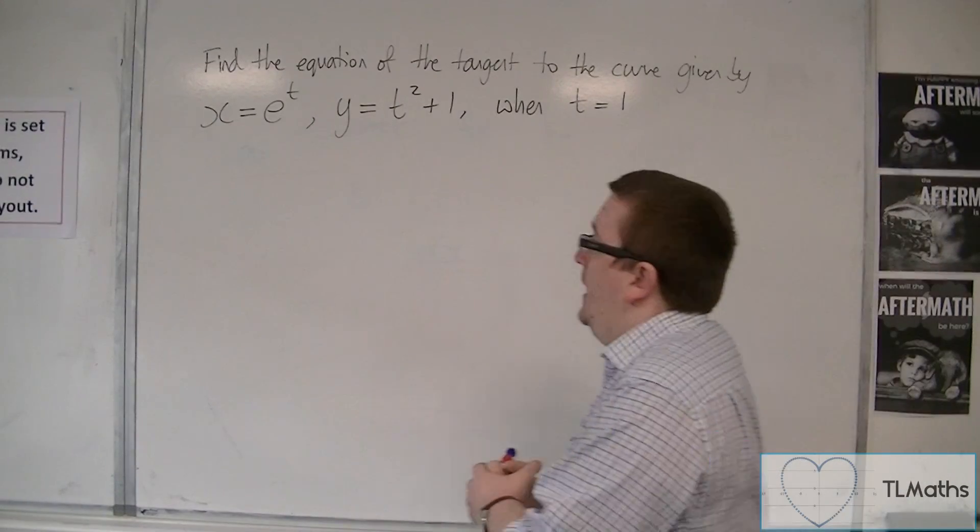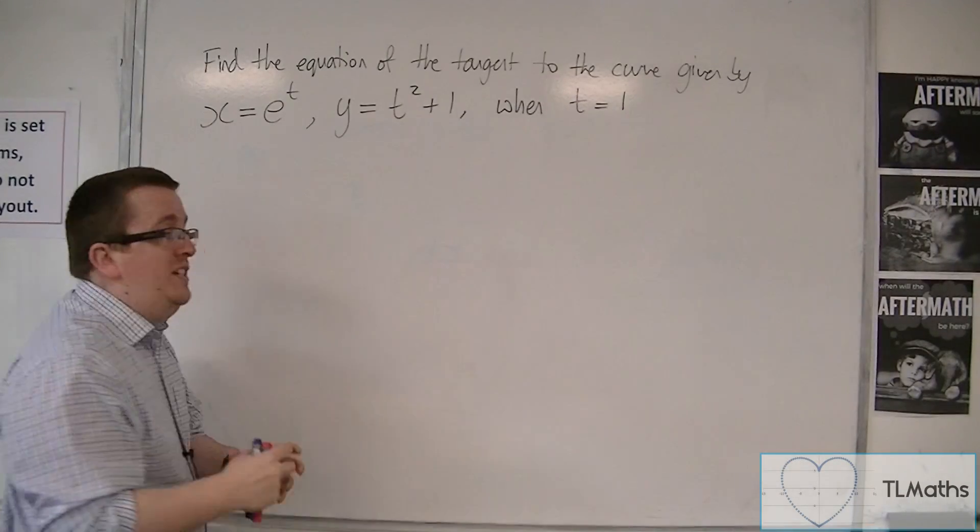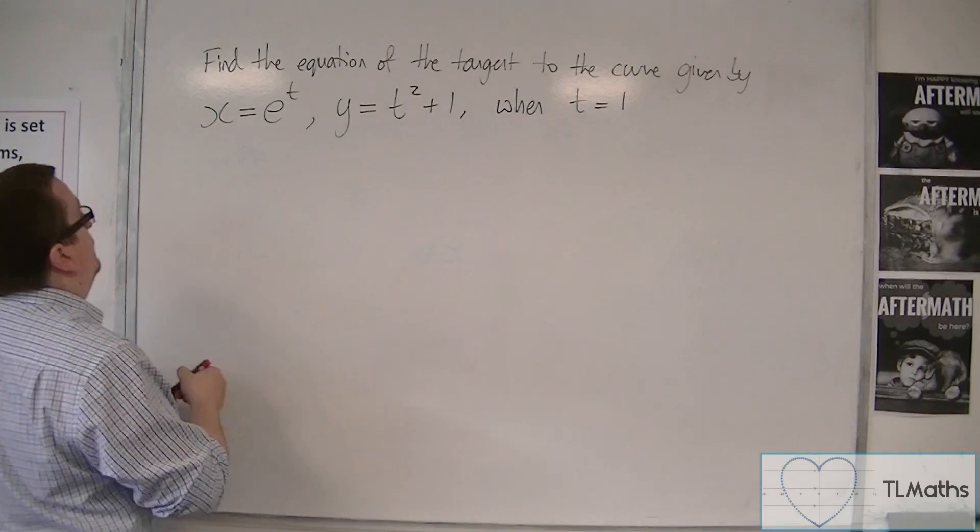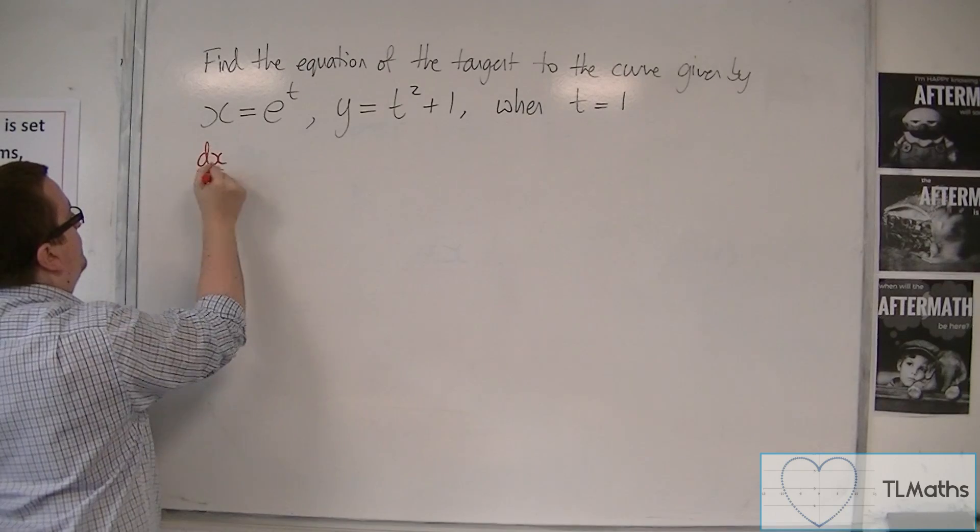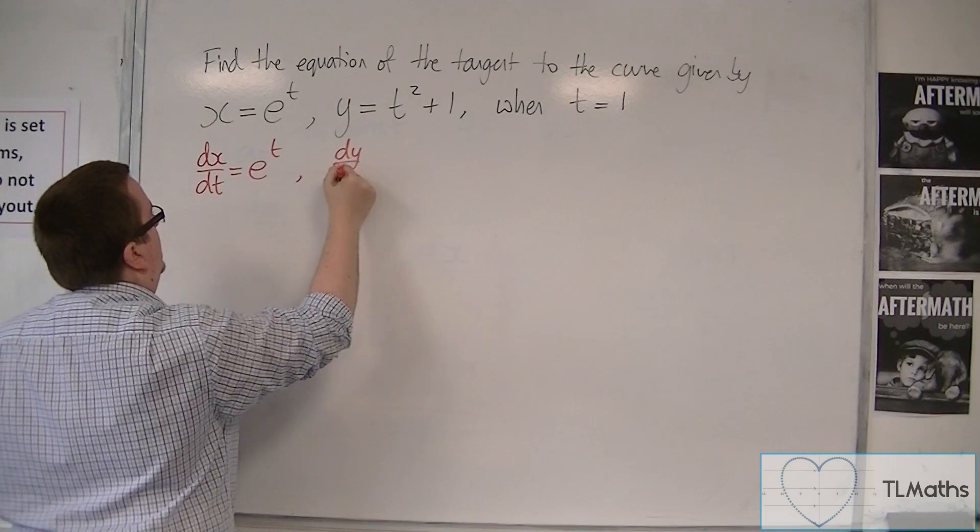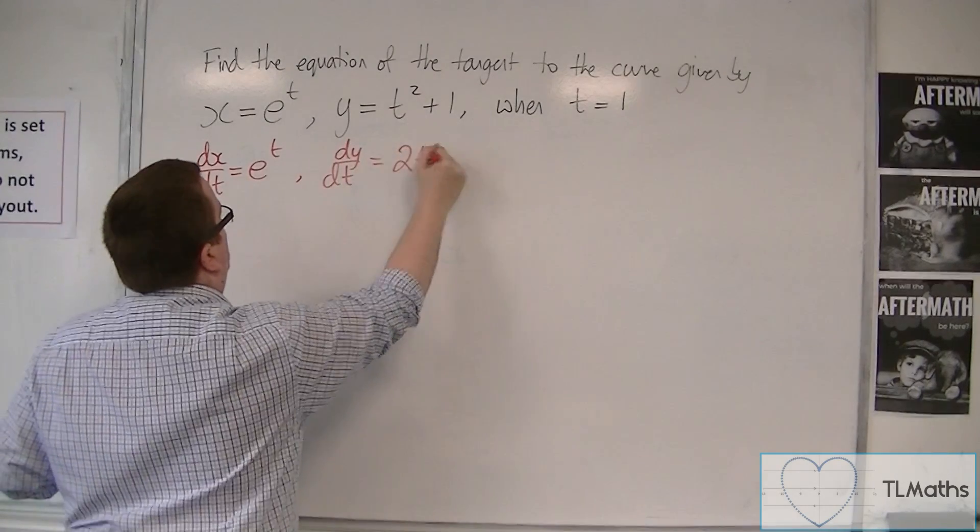So I want to find the equation of the tangent to this curve. So I've got to find dy by dx first. And to do that, I'm going to have to find dx by dt, which is just going to be e to the t, and dy by dt, which is just going to be 2t.